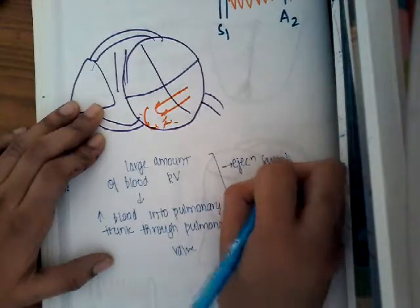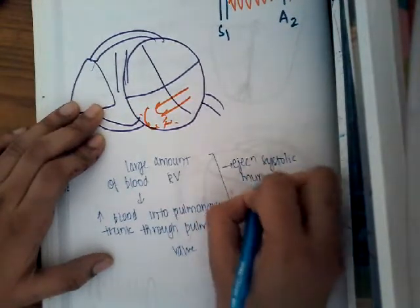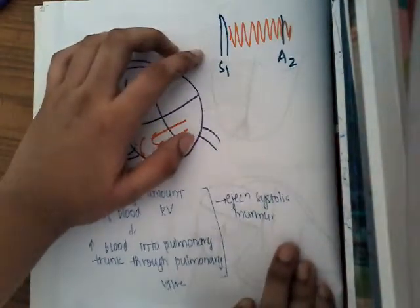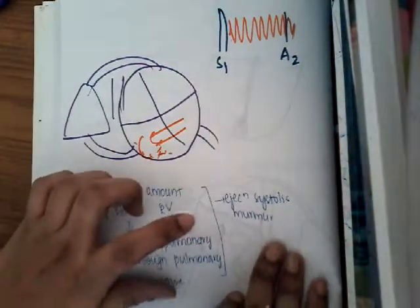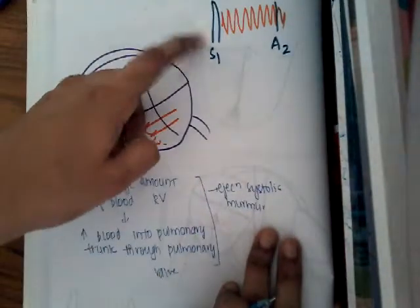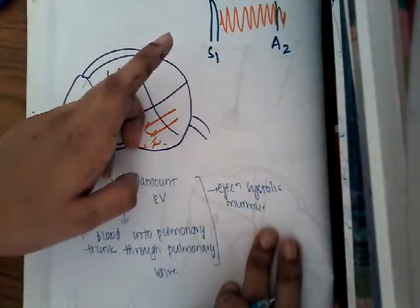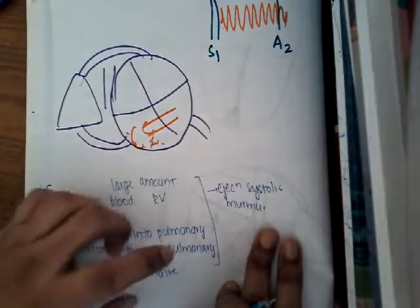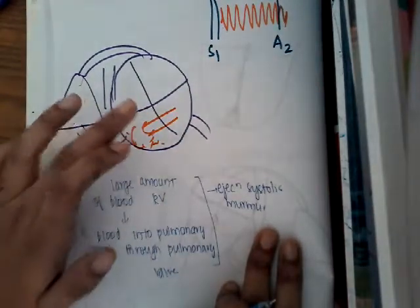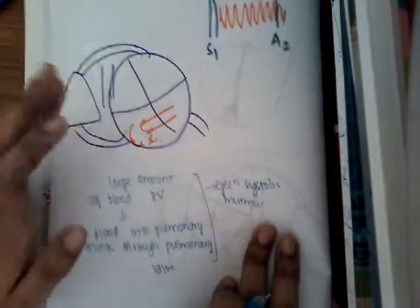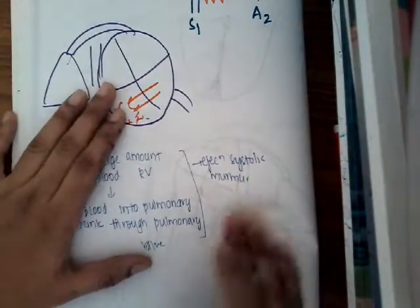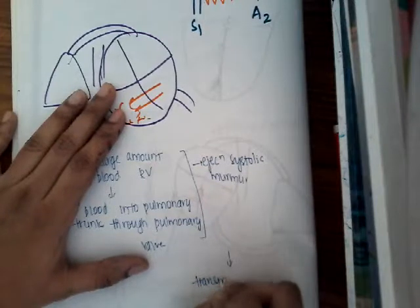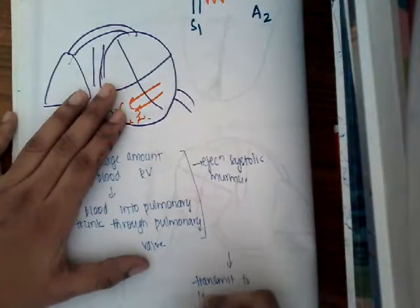Since there is already a pan-systolic murmur, the ejection systolic murmur at the pulmonary area is drowned into the pan-systolic murmur. However, because of this, the pan-systolic murmur transmits to the left parasternal region.